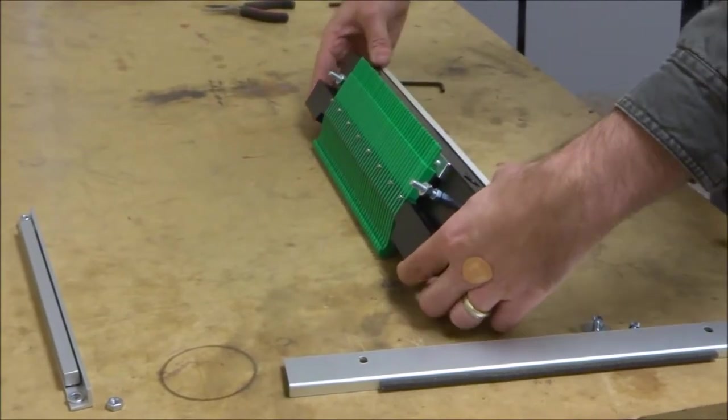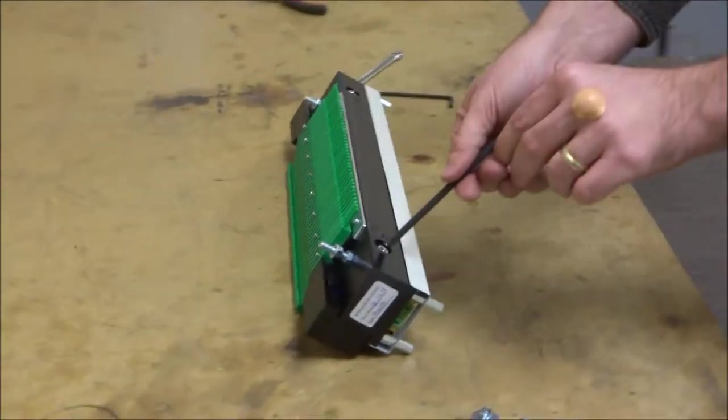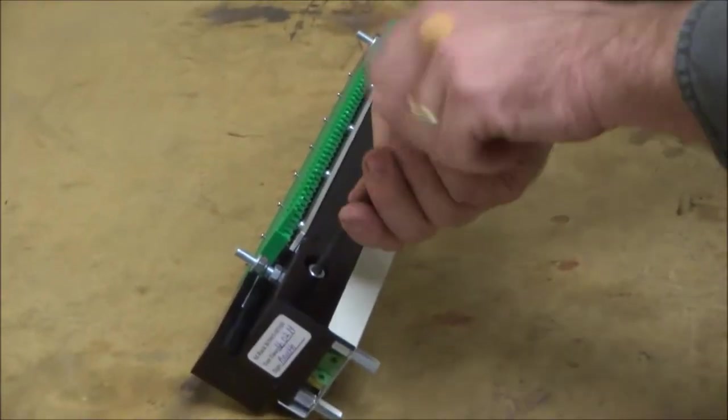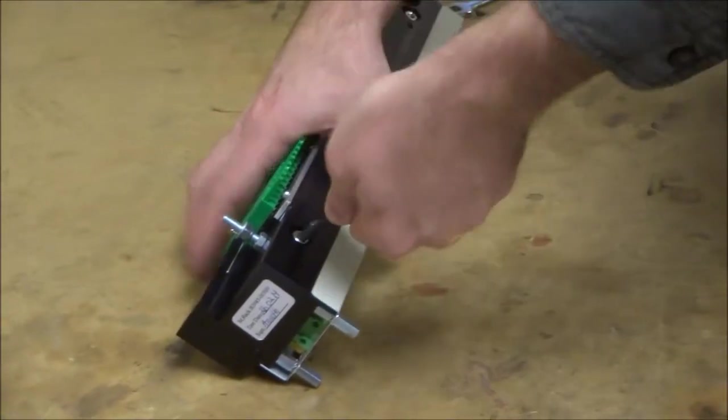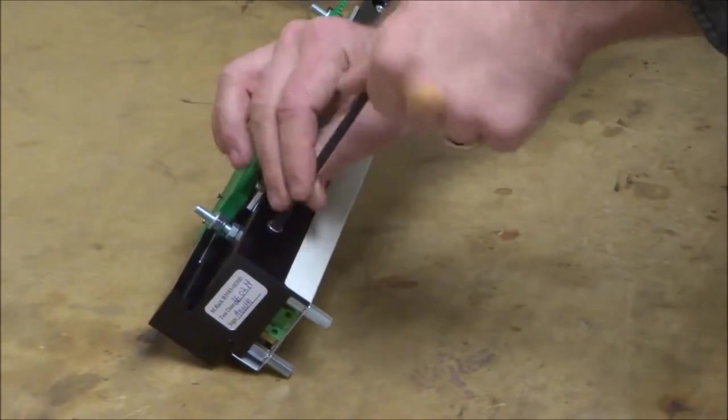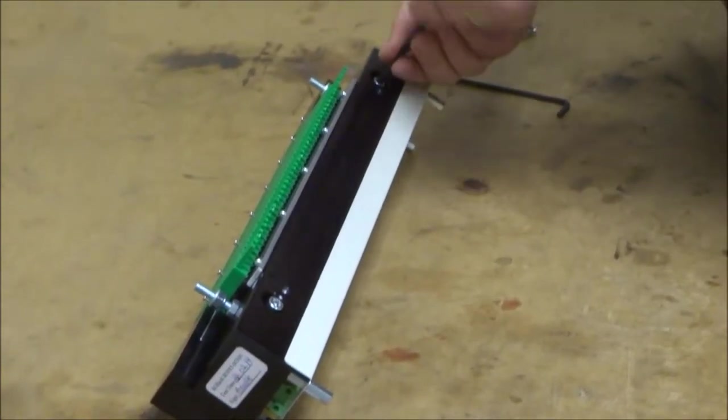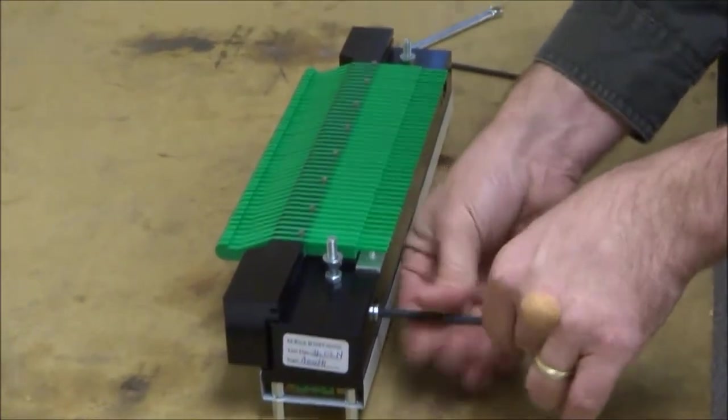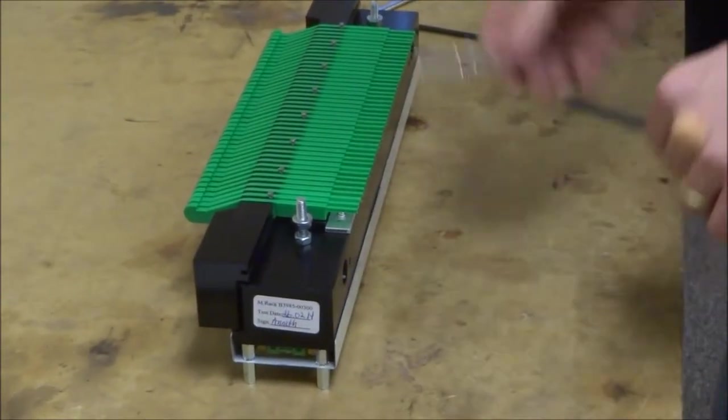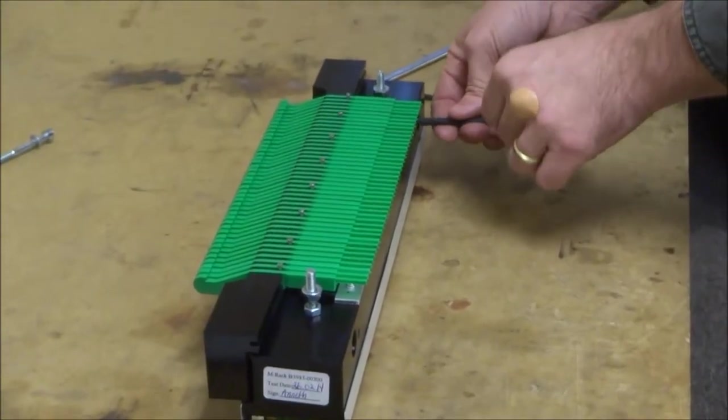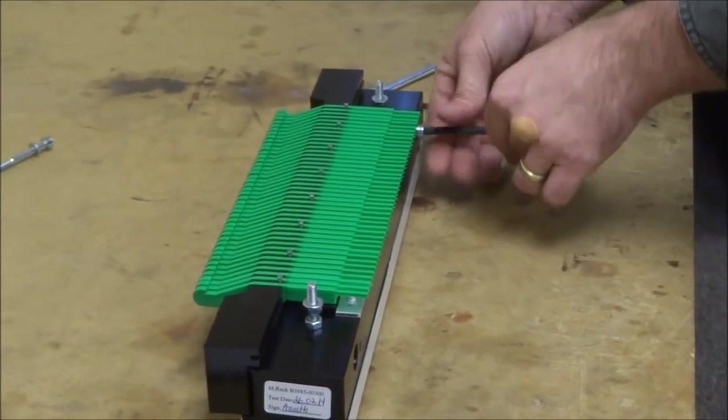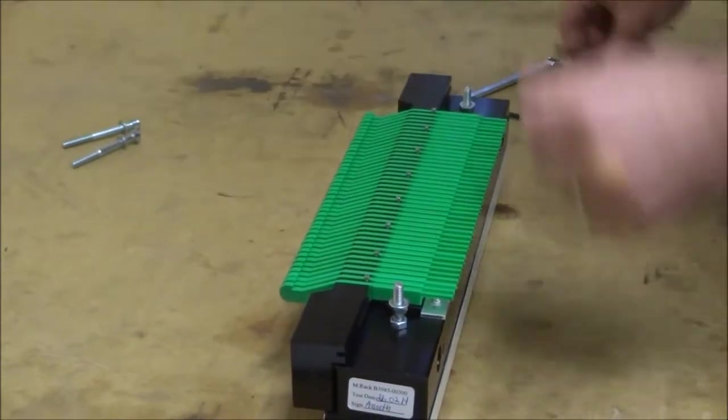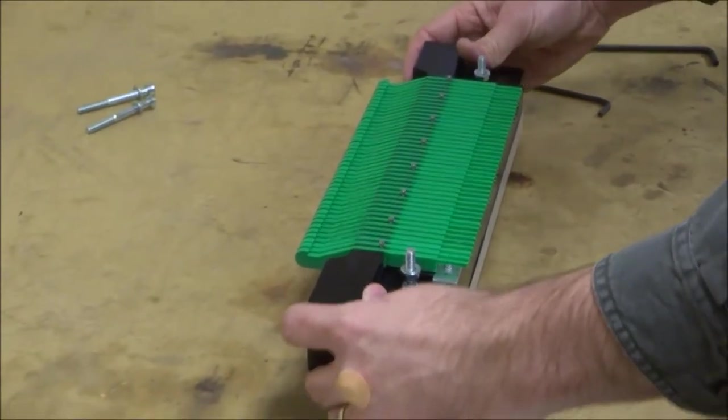Next, you will separate the two pieces of the magnet rack. On this side you'll notice that there's two screws, and we'll loosen those up. Now your magnet rack can be taken apart in two pieces.